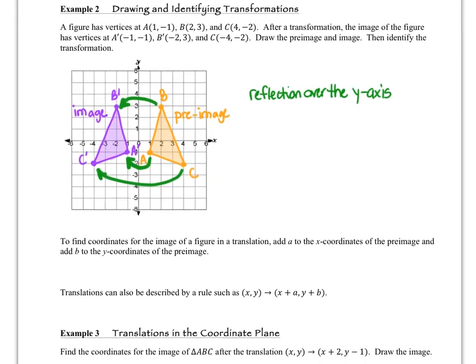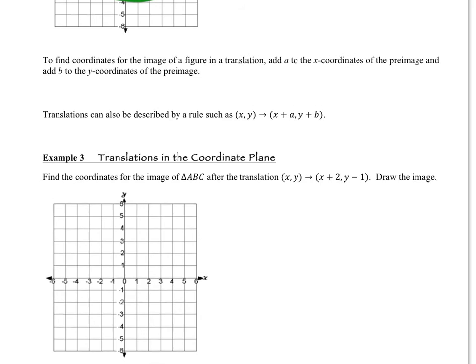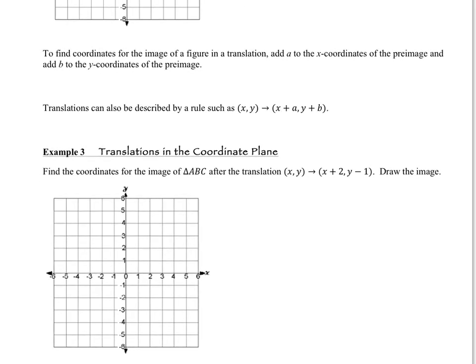So far we've been looking at transformations as what happens on the graph. But there's another way that we can look at transformations, and that is the change that's taking place to the X and the Y coordinate on the coordinate plane. To find the coordinate for the image of the figure in a translation, what we're going to be doing is add a specific value to the X coordinate of the pre-image and another value to the Y coordinate of the pre-image. And that is going to give us the new coordinates.